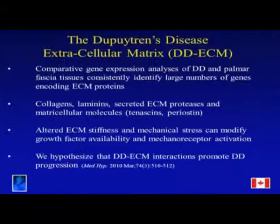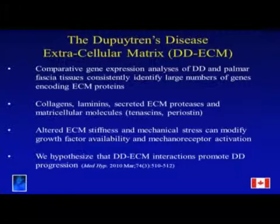As the first speaker gave us a good background on collagens, they of course are markedly upregulated, as is laminin, and a variety of secreted extracellular matrix proteases. I'm going to be speaking about one today which is ADAM-12, a disintegrin and metalloprotease-12, which is consistently seen, at least in many of the published studies, to be upregulated in gene expression arrays.